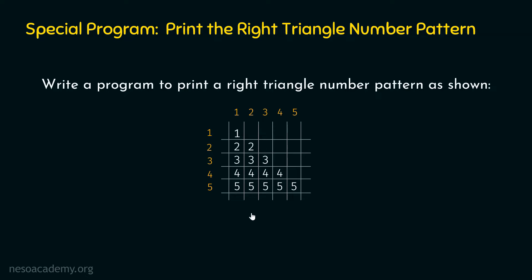The next observation is that each value depends upon its row number. If we are at row number one, we print one. If we are at row number two, we print twos. If row three, we print threes; row four, fours; row five, fives. So these values depend upon the row numbers.